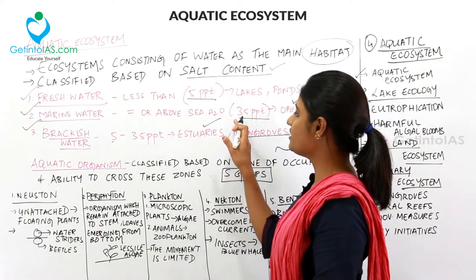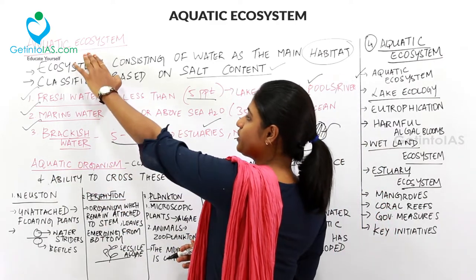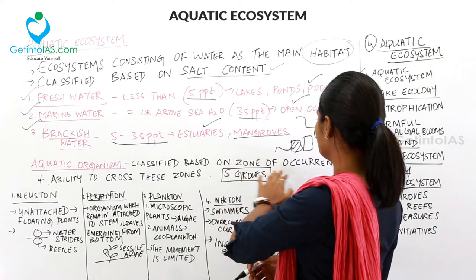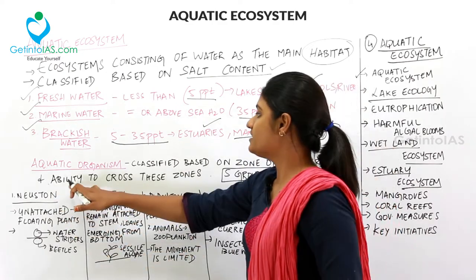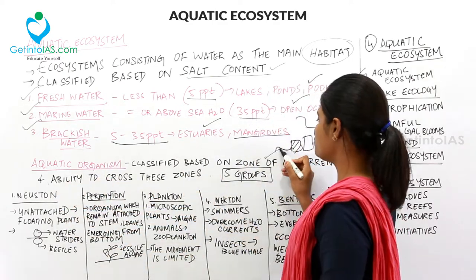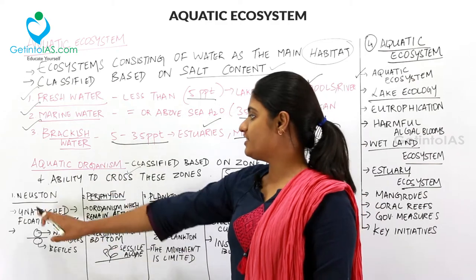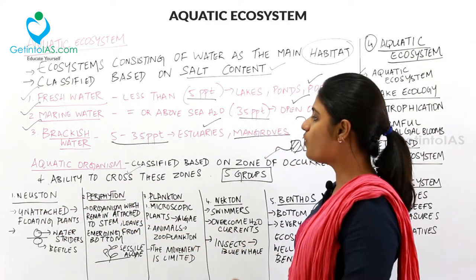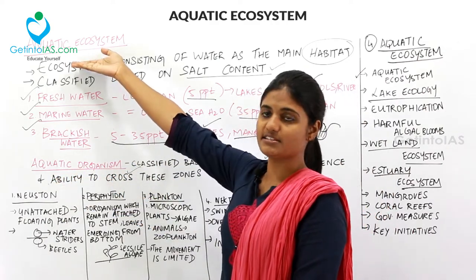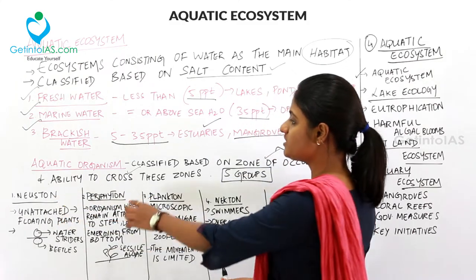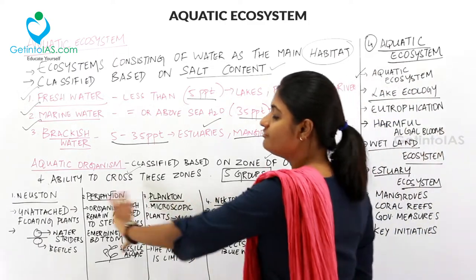Aquatic organisms inside the aquatic ecosystem are classified based on their zone of occurrence and their ability to cross these zones. Based on these criteria, aquatic organisms are divided into five groups: neuston, periphyton, plankton, necton, and benthos.